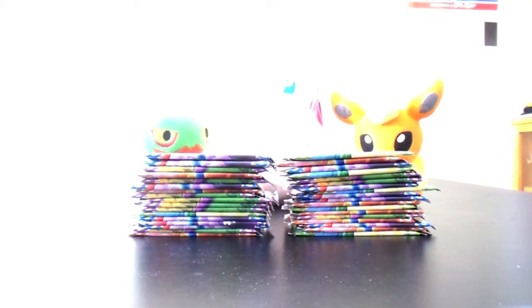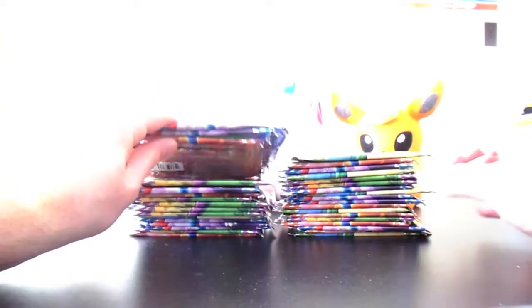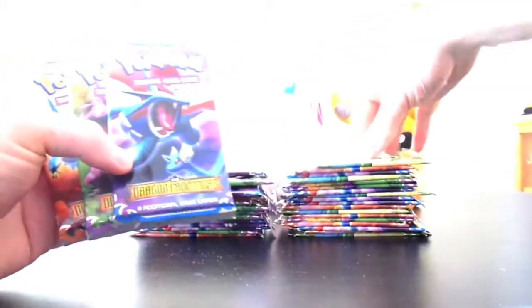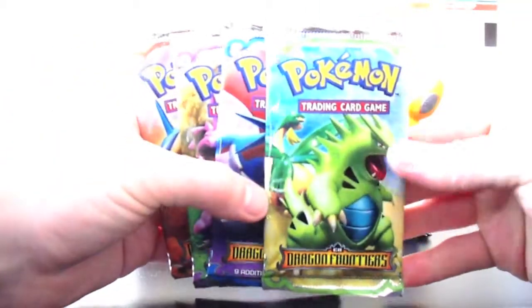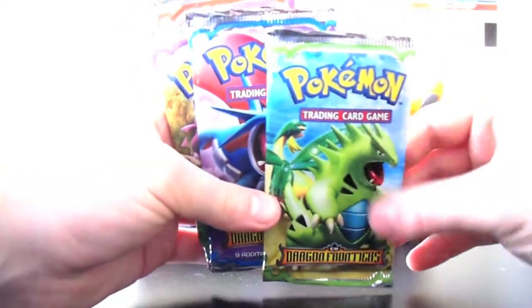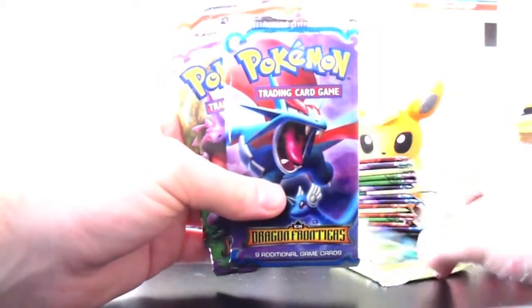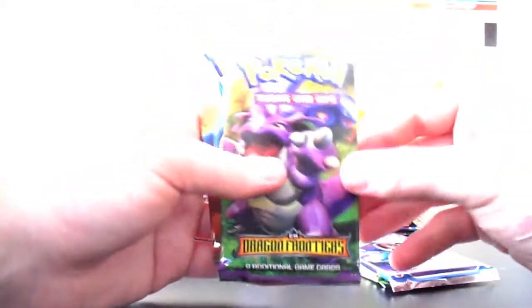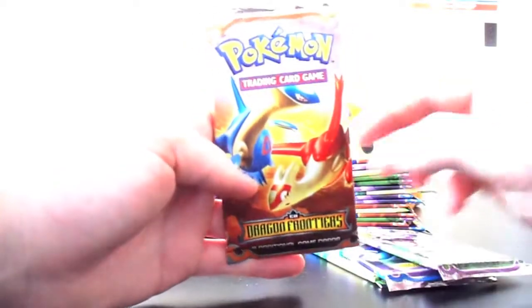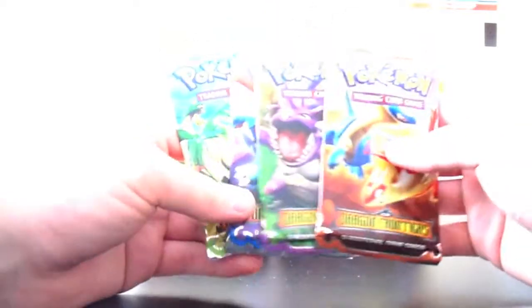Alright everyone, and we're back. And the blisters have been torn off, and now we've just got some beautiful Dragon Frontiers booster packs. We'll get the pack artwork out here, and the packs are very, very smooth. You can tell they haven't been opened or handled or anything. Really smooth. There's Tyranitar and Tropius. Salamence and Dragonair. Nidoking and Arbok. And Latios and Latias.